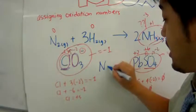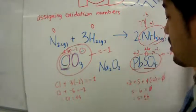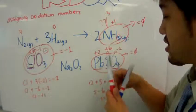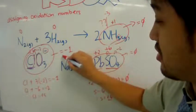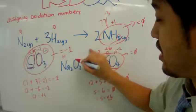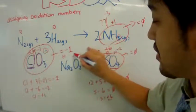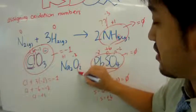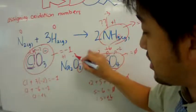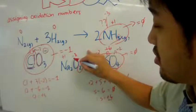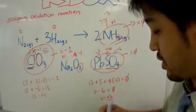Let's look at Na₂O₂. What's the oxidation number? Sodium, being a charged ion, is always plus one. You might think the oxygen is minus two, but it's not a normal oxide — it's a peroxide. Therefore, it must have an oxidation number of minus one.